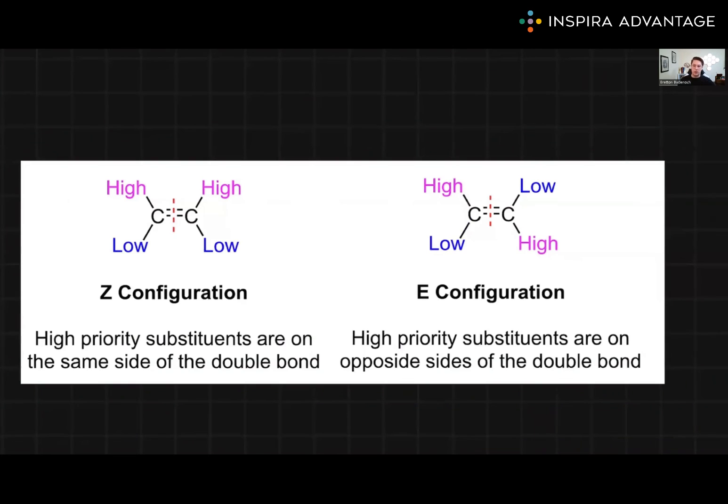On the other hand, E/Z nomenclature is used to describe the stereochemistry of alkenes, where restricted rotation around a double bond causes geometric isomers. The E from the German word entgegen, meaning opposite, and Z from the German word zusammen, meaning together. Notation is again based on the Cahn-Ingold-Prelog priority rules, which assigns priority to substituents based on their atomic number.